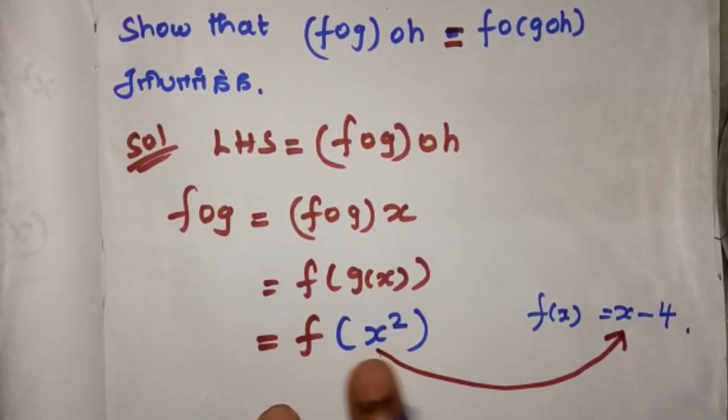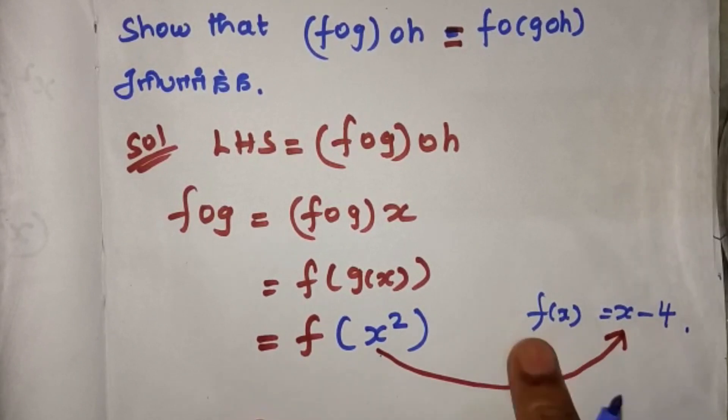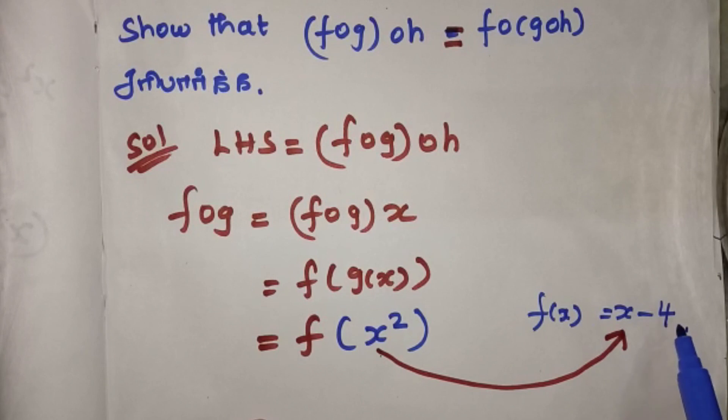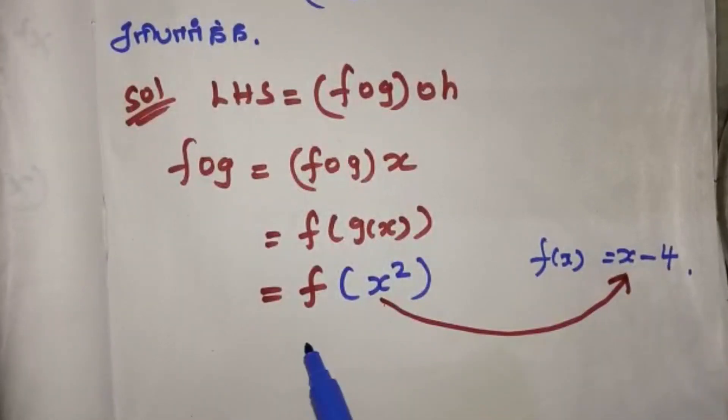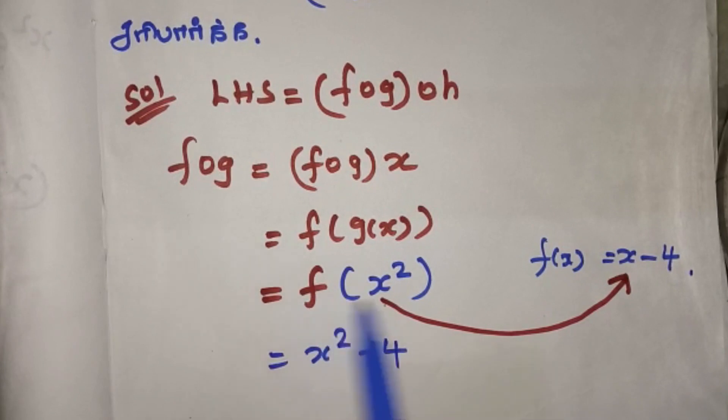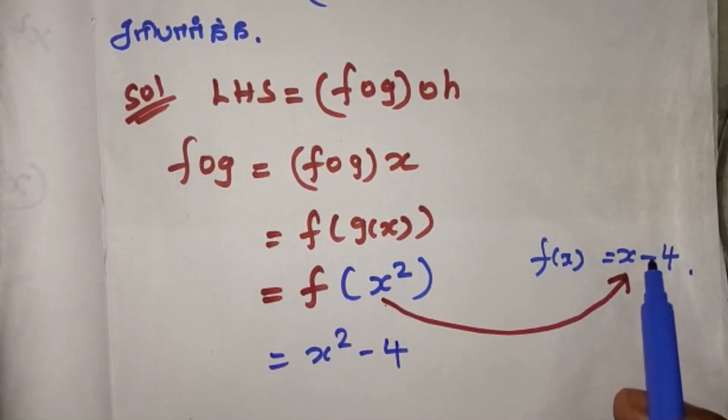Now here is f of x. f is going to look at x minus 4. Now x is going to look at x square minus 4. f of g is going to look at x square minus 4.